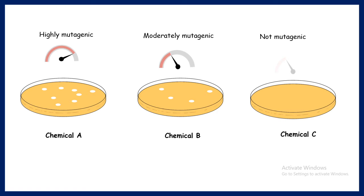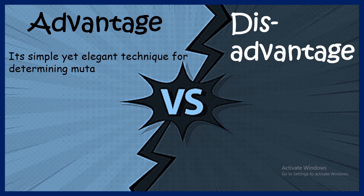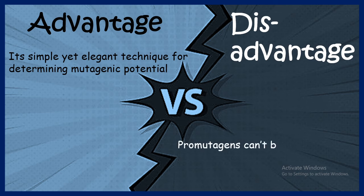This is a very good test for first-pass screening of the mutagenic potential of a particular chemical. The advantages of this technique are that it is simple, doable, cost-effective, and very fast.